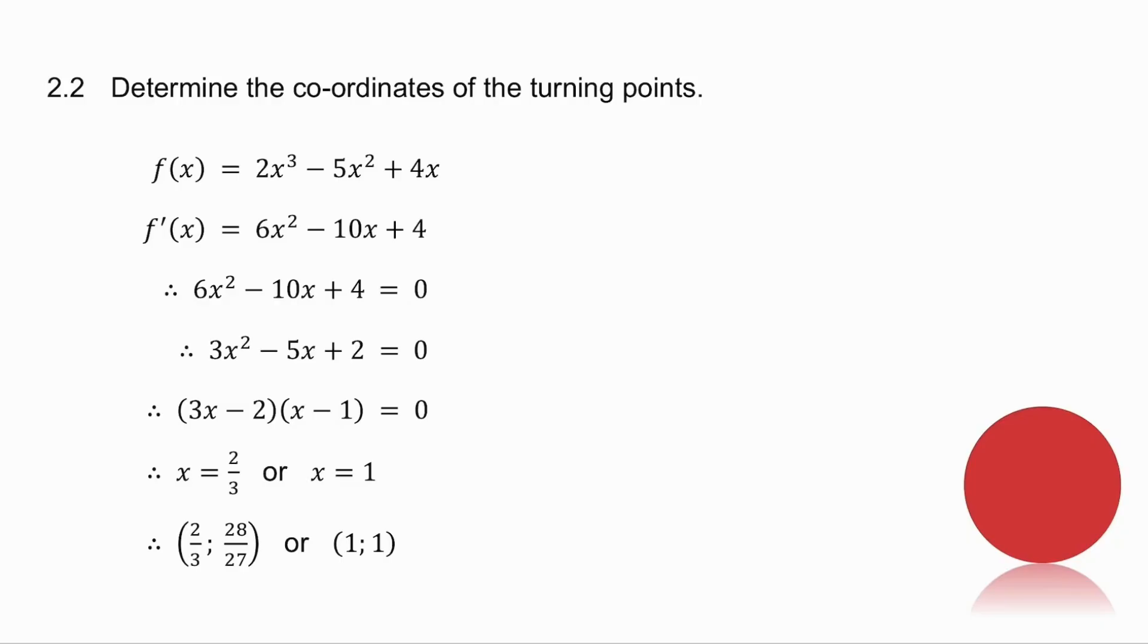2.2 asks you to determine the coordinates of the turning points, so remember to get turning points, you take the derivative, and you let it equal 0. Solve, and you get two values for x. Substitute them both back into the original equation, and you get the coordinates of the two turning points.